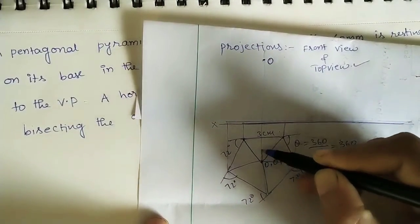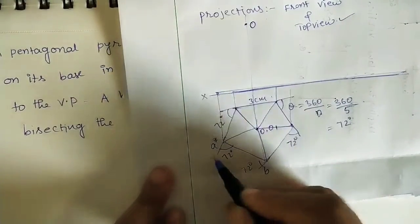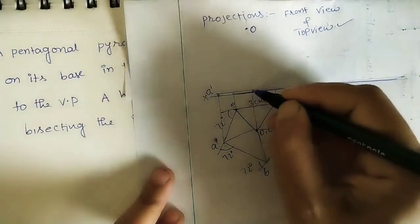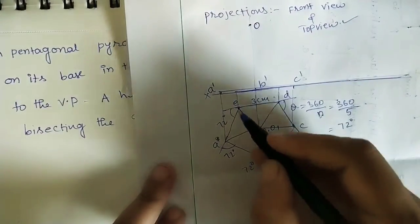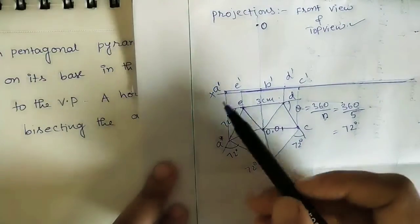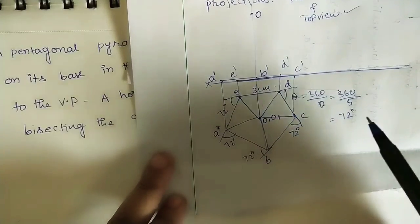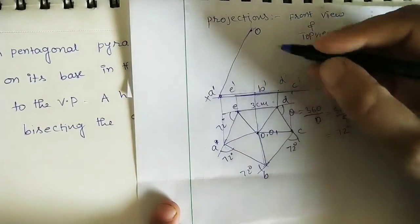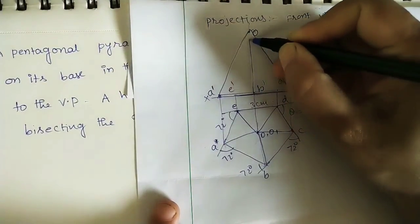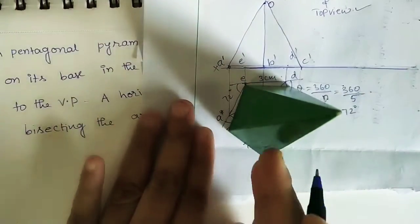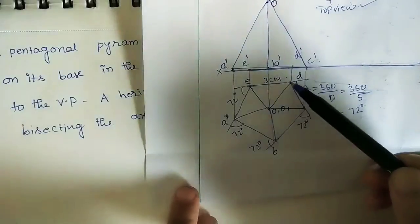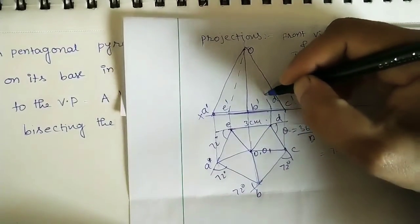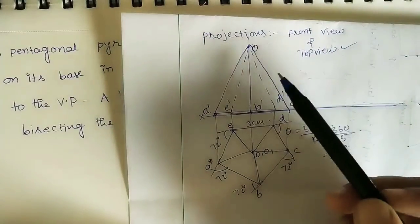Draw the projector lines at all the corners — projector lines are drawn as light color lines. We give small letter names a, b, c, d, e to the corners. In the front view the corresponding points are a', b', c', d', e'. Join all these points to the apex. Edges that are not visible are drawn as dashed lines for invisible edges.